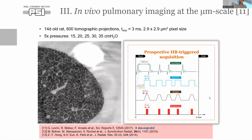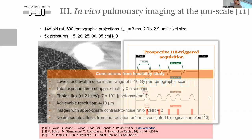The main challenge was to record the heartbeat, evaluate at what point in the cardiac cycle it is most favorable to take images, and set up an acquisition cascade where the shutter opens, we expose the animal to X-rays, and move to the next rotation. The lowest achievable dose was in the range of 5 to 10 Gray per tomographic scan for the small lung region scanned, at the very high photon flux available at the synchrotron.